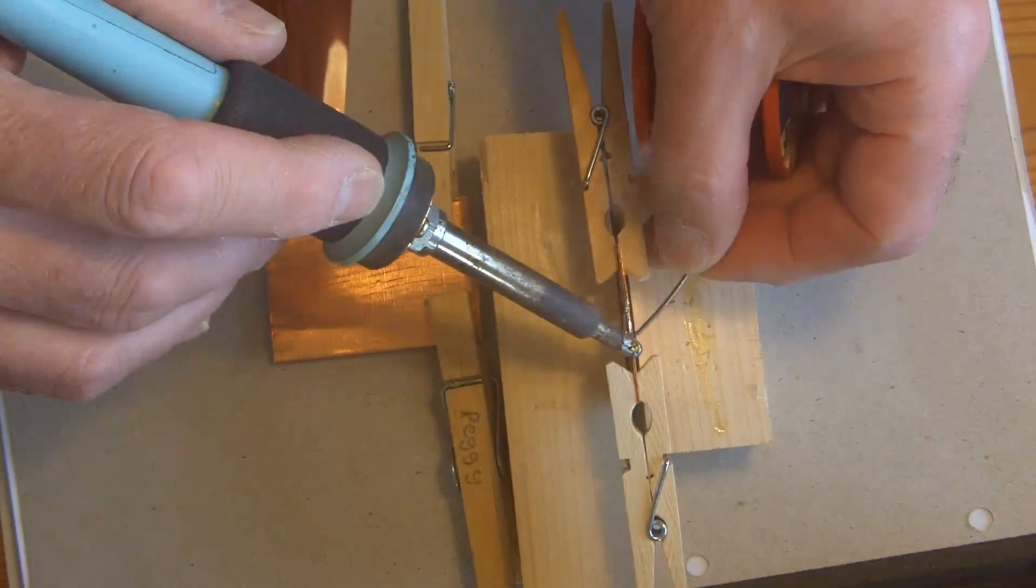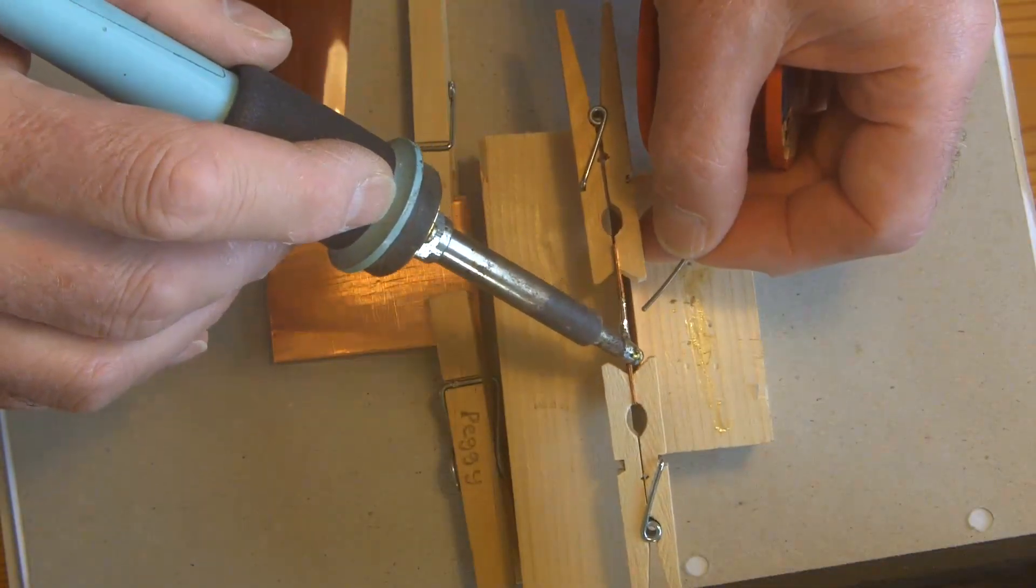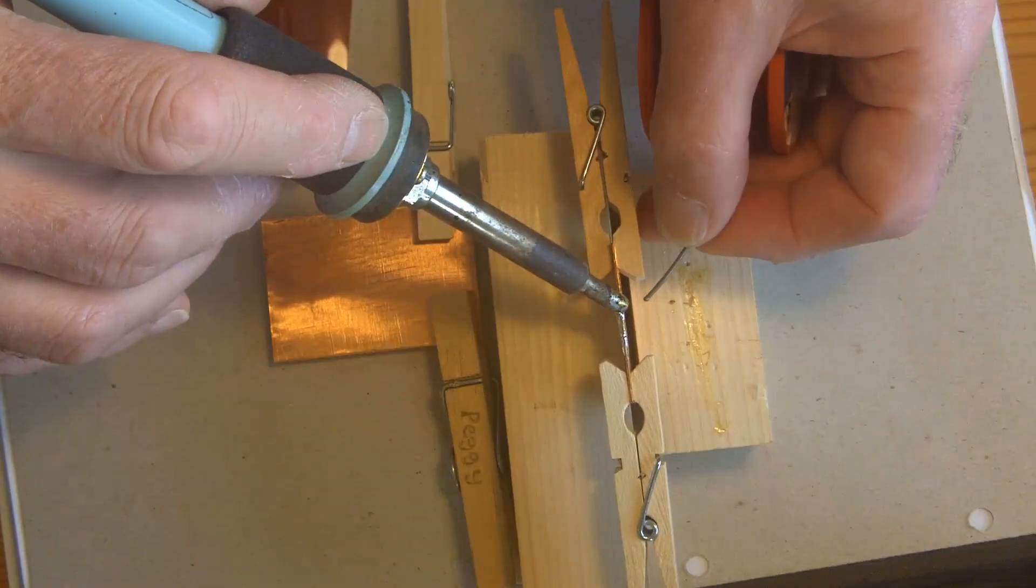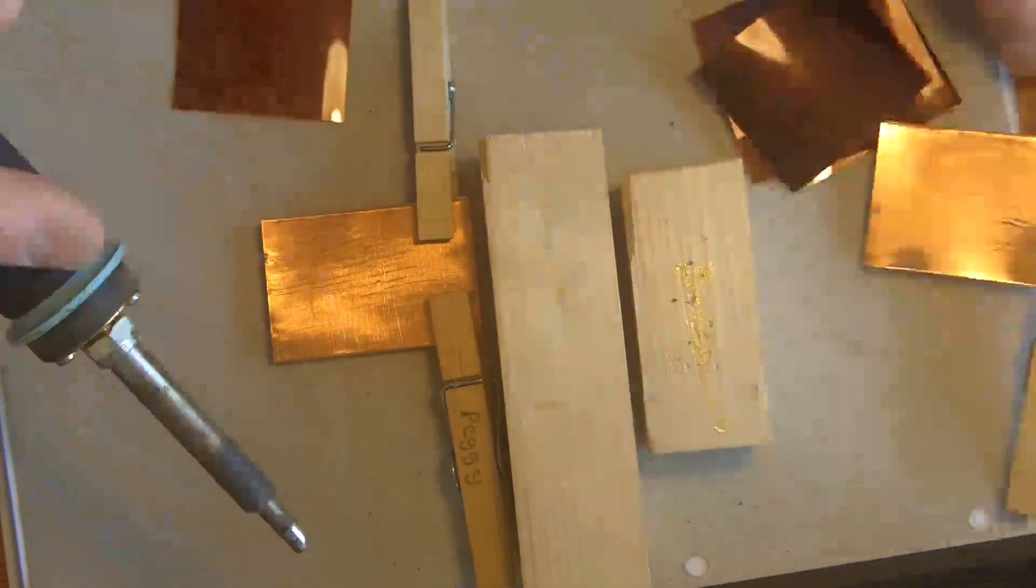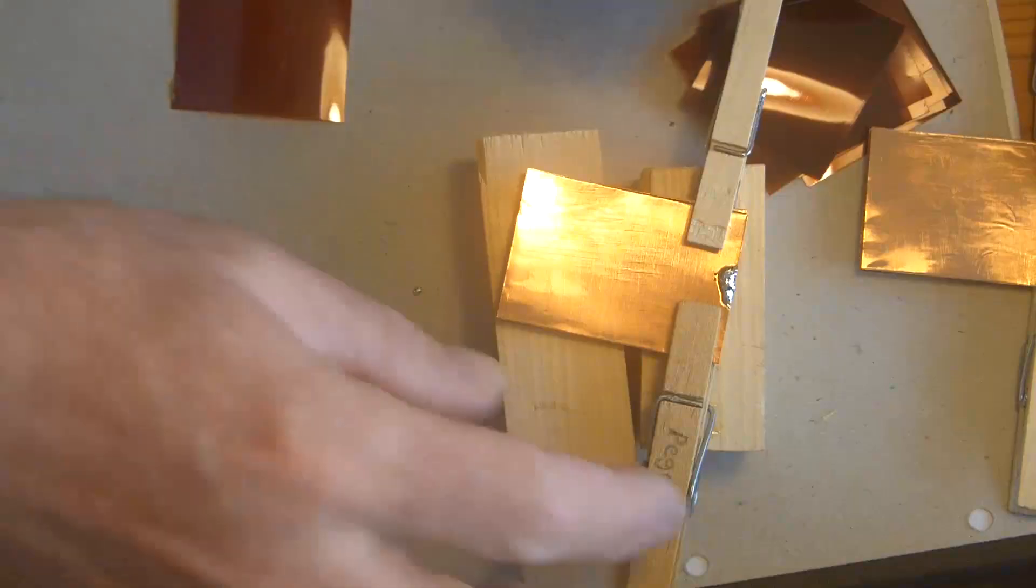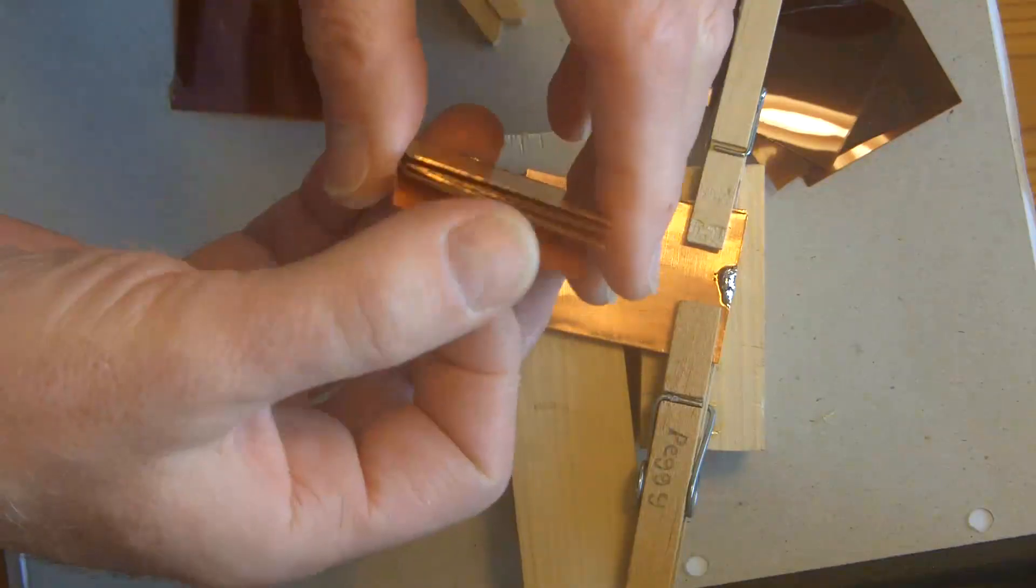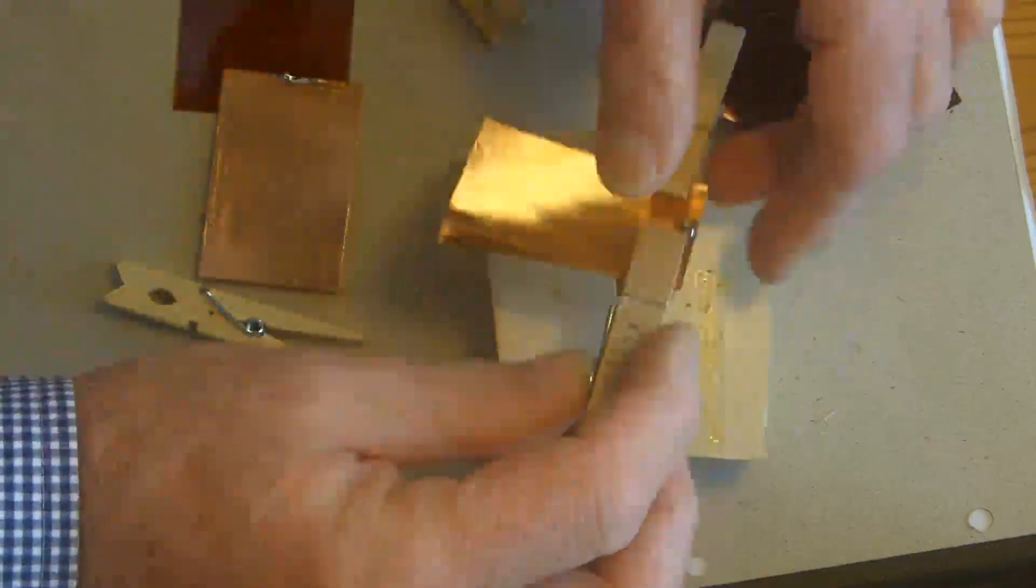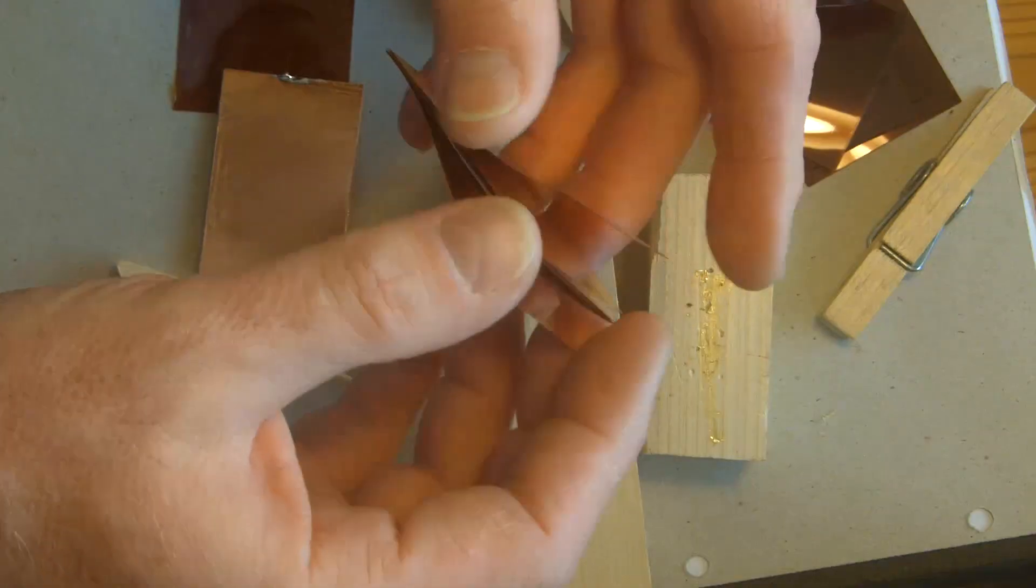I'm just soldering the ends of these together. You can, I'm using copper simply because I can solder it together. You can solder aluminium, but boy, it's a very devil to do. Okay, that should have those. Yeah, they're all consolidated. It just makes the assembly a little bit easier to deal with. I hope.